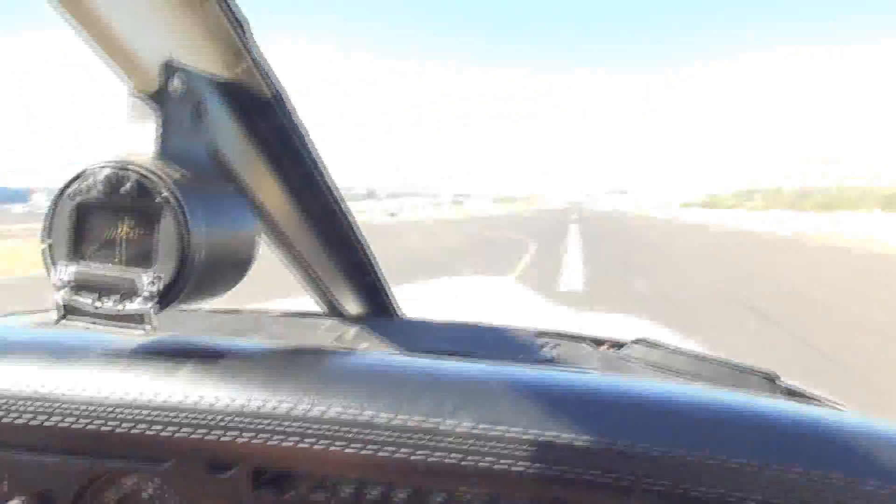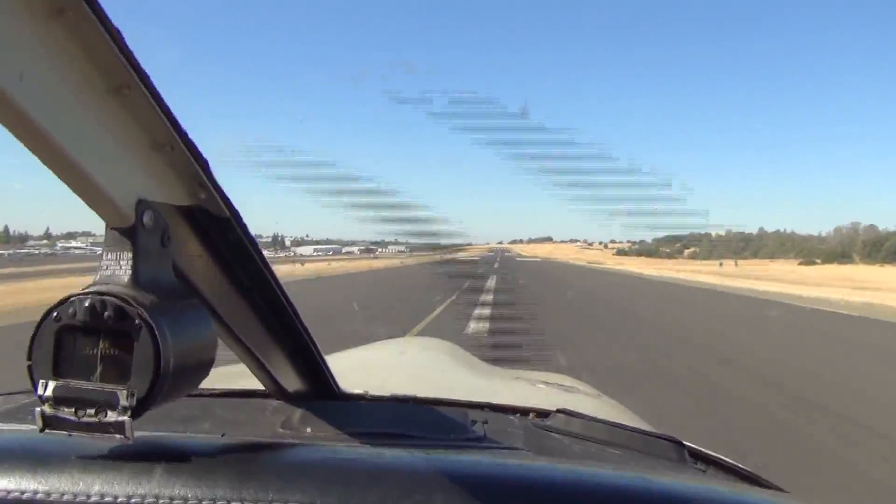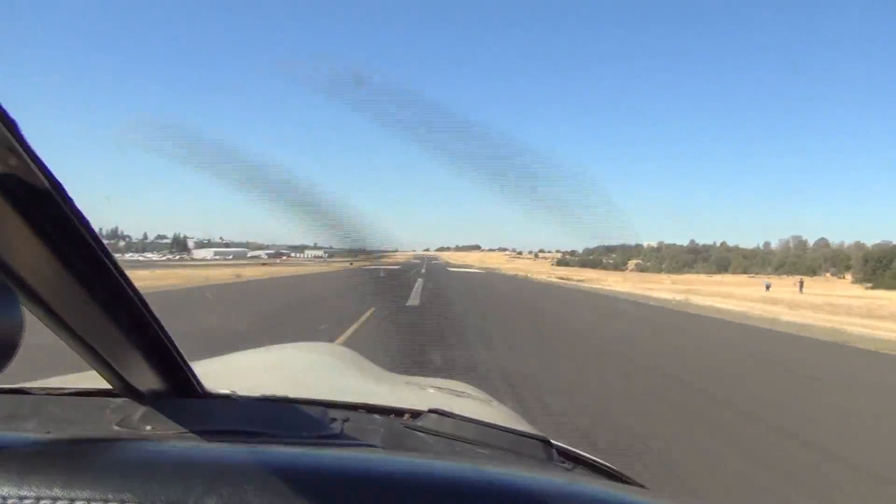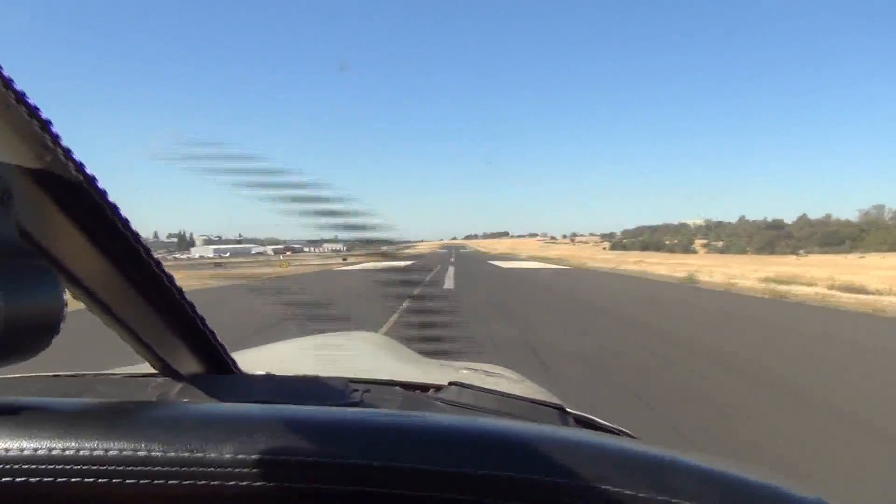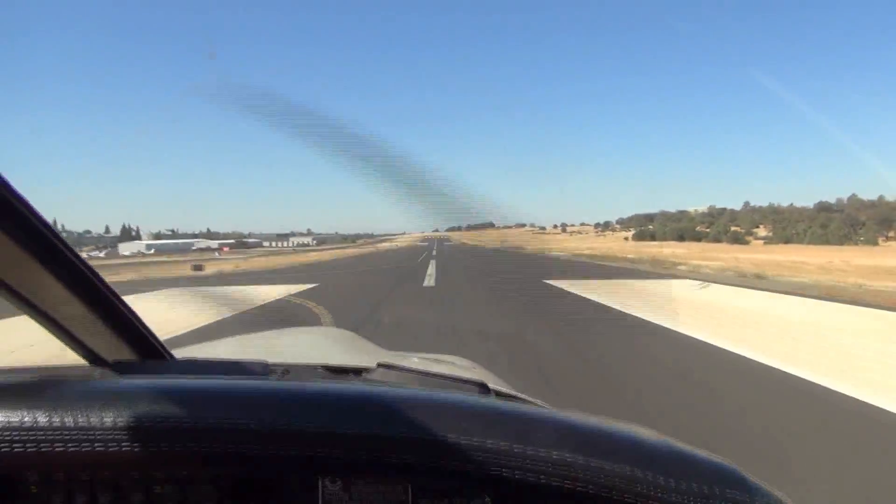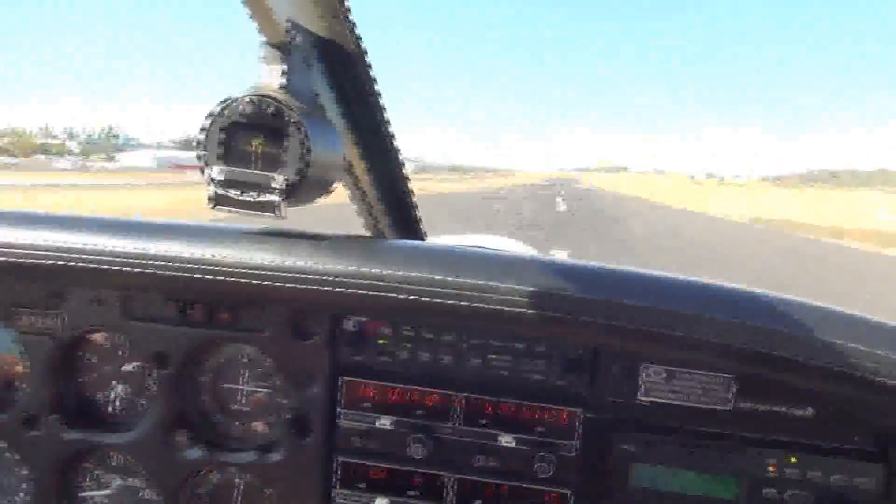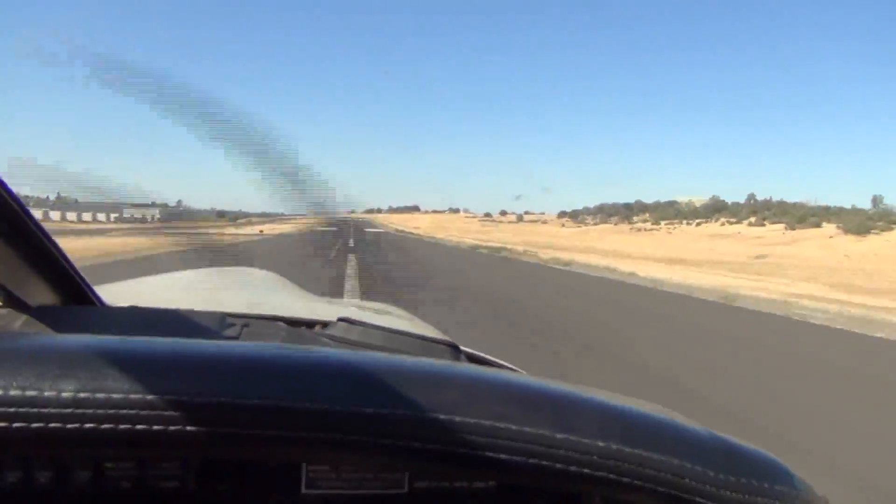So here we are on our takeoff roll. We're going 40 knots. About 65 knots, I'll start pulling back on the yoke. 60, 65, you can start to feel the airplane lighten. And there we go.